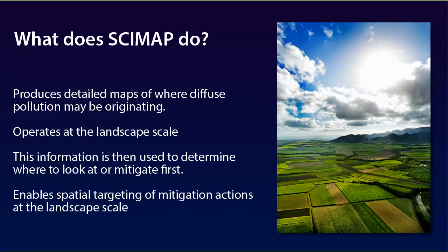The approach aims to identify where in the landscape the problem is most likely to be originating. If you can see a problem at a point in the river, you can trace it back to the landscape and have a list of where to look or mitigate first. Because of this, CIMAP enables the spatial targeting of mitigation actions at the landscape scale.